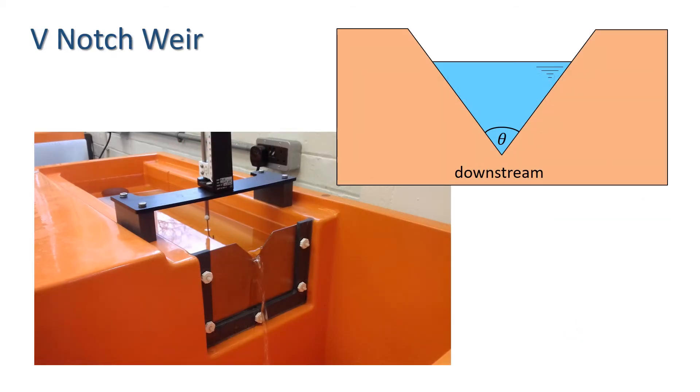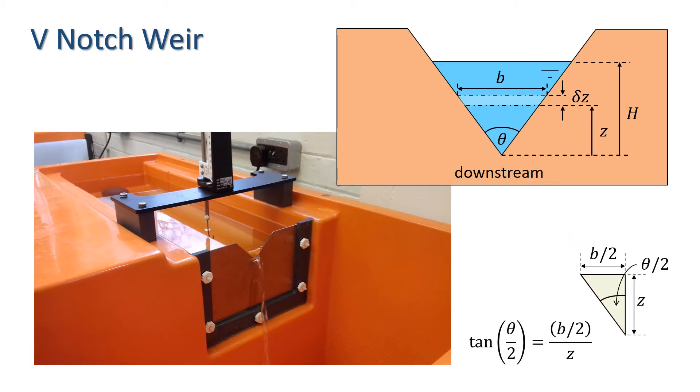We turn now to the V-notch weir, which has also a structure with a smooth plain vertical plate and beveled edges downstream, but with a V-shaped incision through which the water can pass. We're going to do a similar analysis. So first, we set up an elementary area of width B and height delta Z as before. In this case, the width of the elementary area B varies with height, but if we know the angle, then we can find B for any elevation Z, since we have tan of a half theta equals a half B divided by Z, i.e. B equals 2Z tan theta over 2.